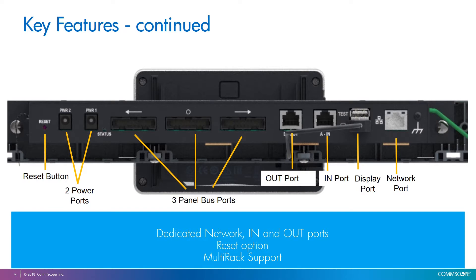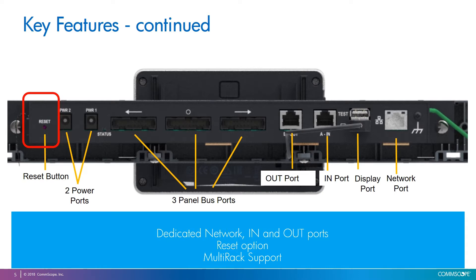Here we see the InVision Controller X from the back. On the right side we have a dedicated RJ45 port for network connection and two additional RJ45 ports for the in and out connections to other nearby controllers. On the left side we have a reset button. This lets you delete all information in the InVision Controller X and clear configuration, network, and security settings to factory defaults. There are also three panel bus ports which allow this new InVision Controller X to provide intelligence to up to three adjacent racks.